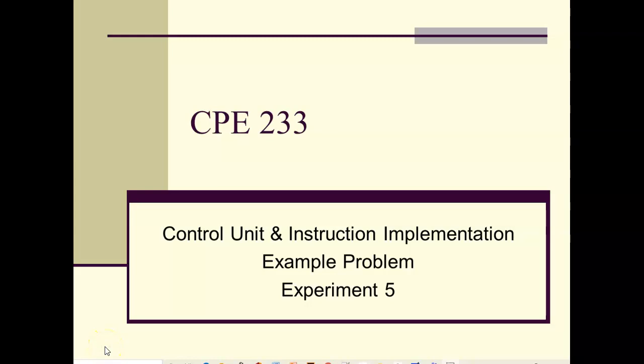This is lecture 13 — we skipped lecture 12, so this is kind of lecture 12 but we're calling it lecture 13. What we want to do in this lecture is get ready for experiment 5. Experiment 5 involves adding two more modules, putting all those modules together, and having the resulting computer execute a program. We'll talk more about that and do some example problems.